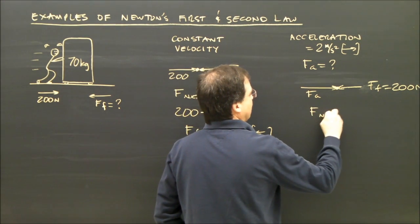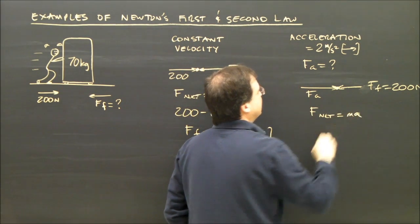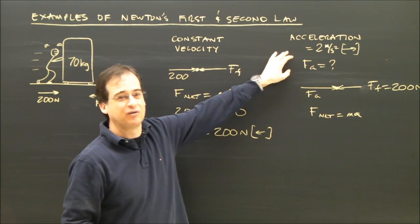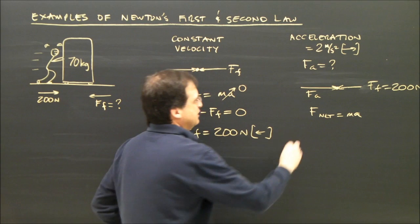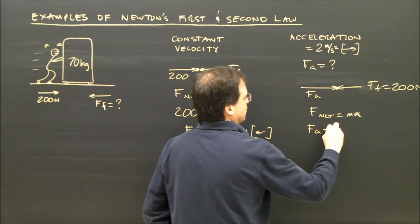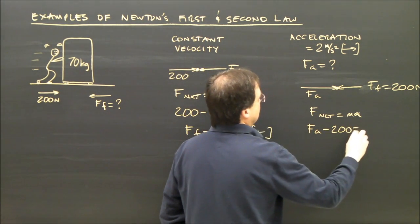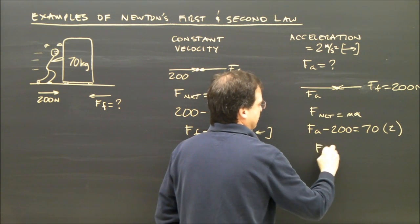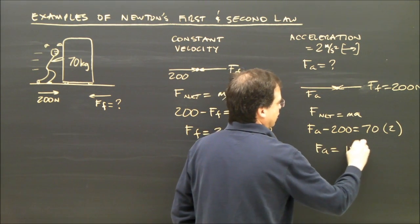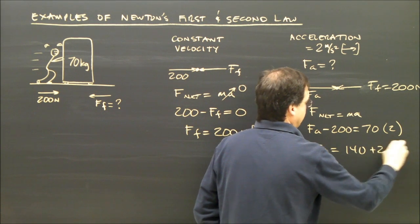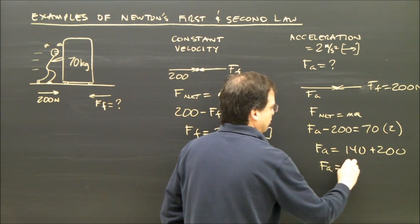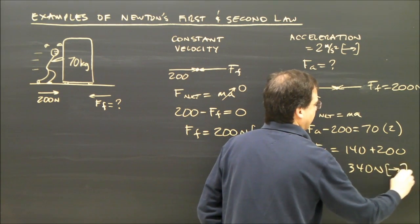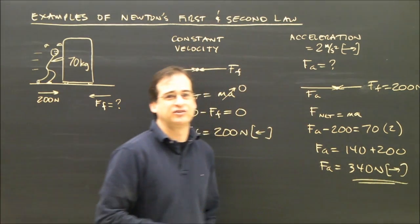So how much must I push forward to overcome friction and get an acceleration of 2 meters per second squared? So I use my Newton's second law formula because Newton's second law applies. It is an unbalanced force, it's causing acceleration, so F net equals MA. So I have my force forward minus 200 equals M, 70 times A, 2. So the applied force equals 140 plus 200. I have to push with 340 newtons to the right to get it to accelerate.